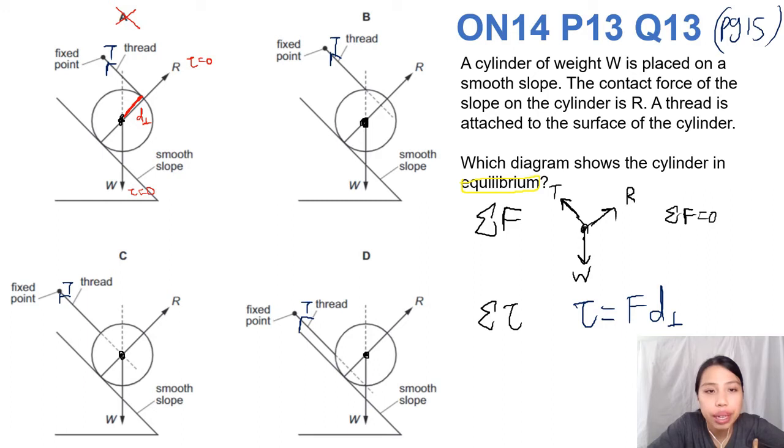Let's look at B. B is almost the same thing. R is not going to cause a torque. W is not going to cause a torque. T has moved in front a little bit - wait no, it's a little bit less perpendicular distance. So we're gonna have another anticlockwise torque. Not B.